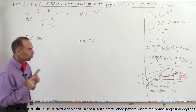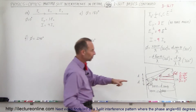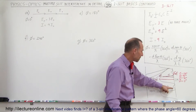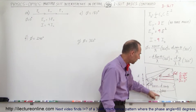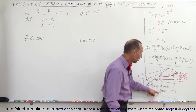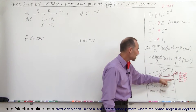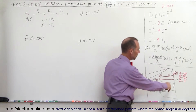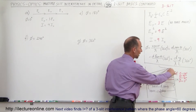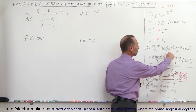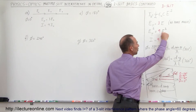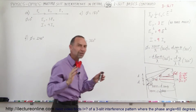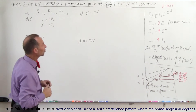What we want to show here is why we have this intermediary maximum before we have another large maximum on both sides. The pattern continues: small maximum, big maximum, small, big, small, big and so forth. So how does that work? Why is that so?